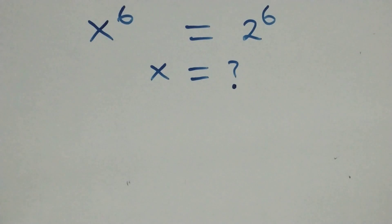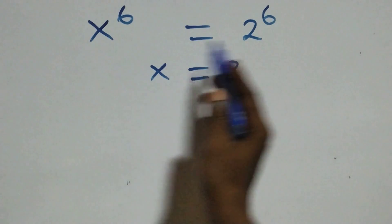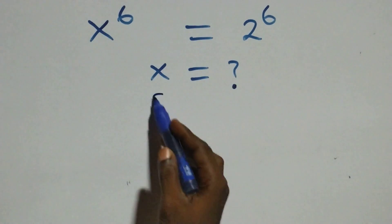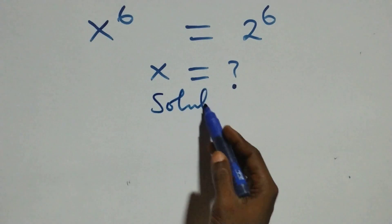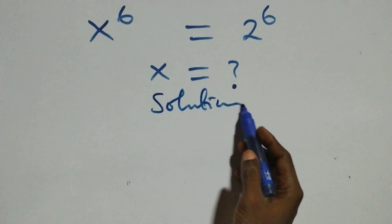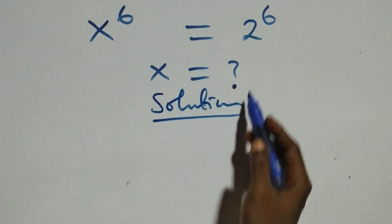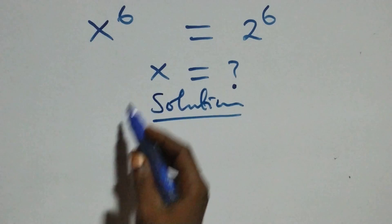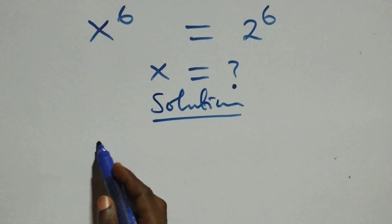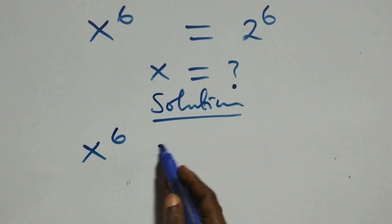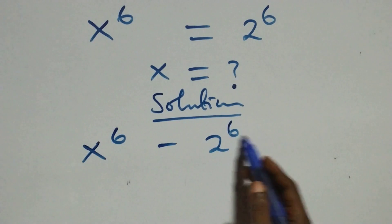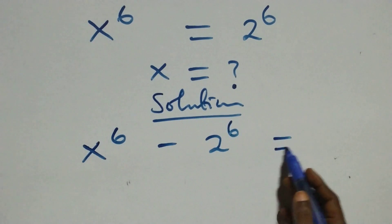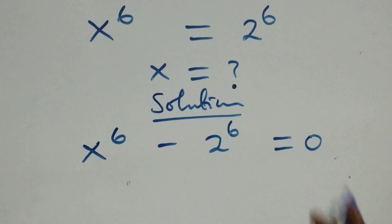Hello, you are welcome. Here we solve a nice exponential equation. We take 2 raised to power 6 to the left-hand side, giving us x raised to power 6 minus 2 raised to power 6 equals 0.